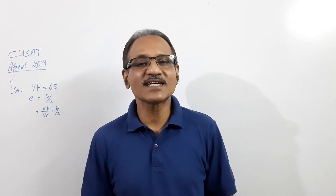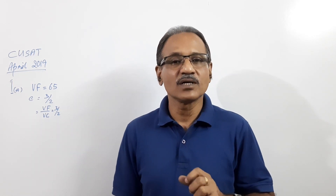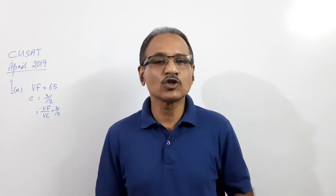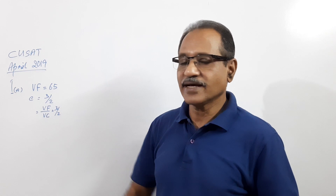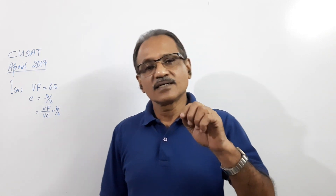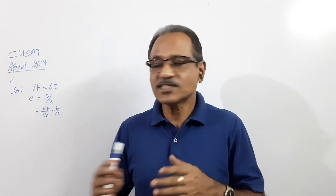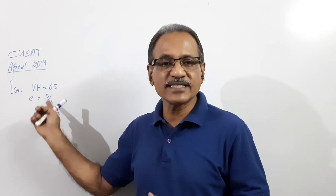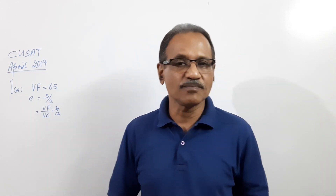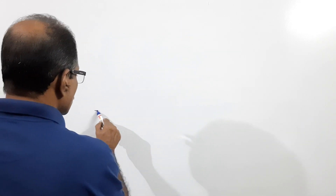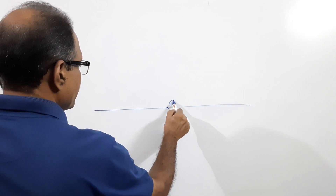Welcome to Engineering Graphics class. I'm Dr. Vinod Kumar. In this video we are going to discuss the question paper of QSAT April 2019. The first sub-question of question number one, that is 1a, says: the vertex of a hyperbola is 65 mm from the focus, the eccentricity is 3 by 2. Draw the hyperbola and draw normal and tangent. Let's draw a horizontal line and on it locate F and V.